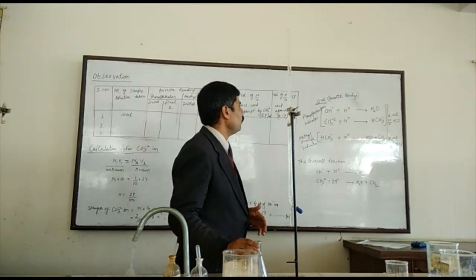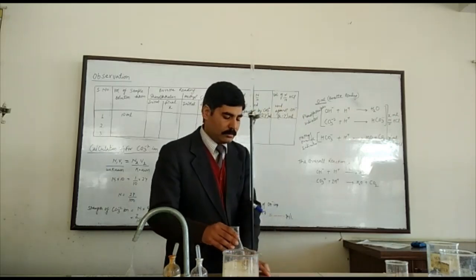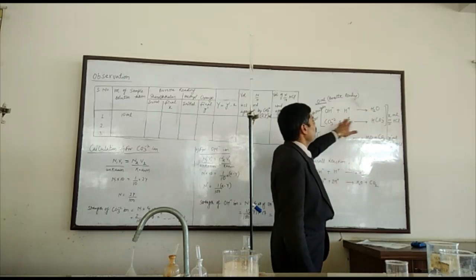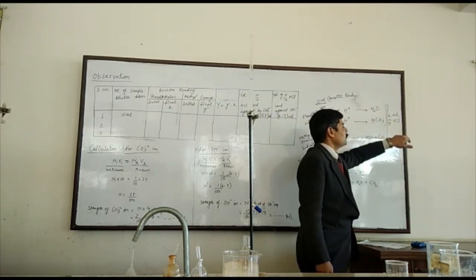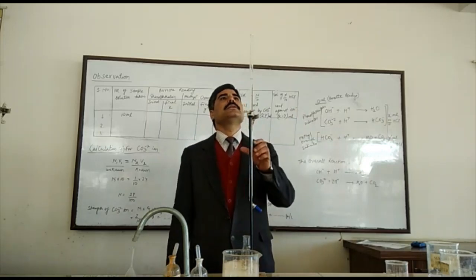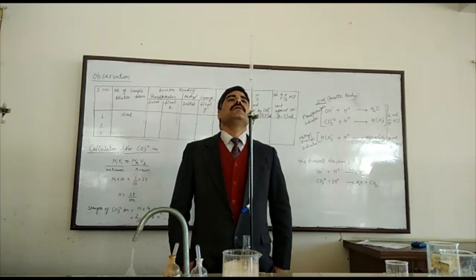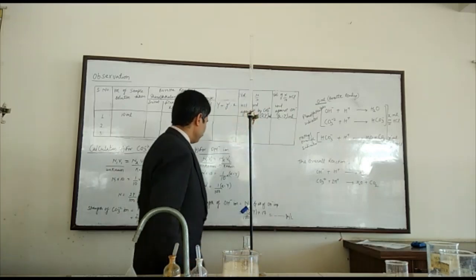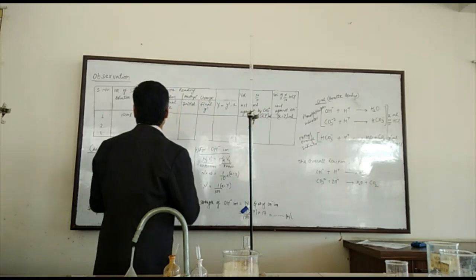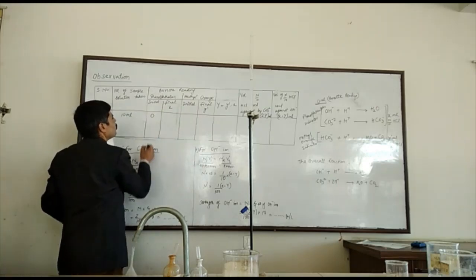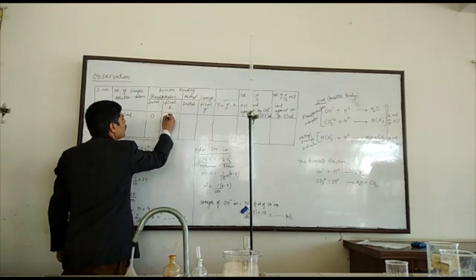This is the endpoint for the phenolphthalein indicator. During this, the hydroxyl ions get completely neutralized, whereas the carbonate ions get partially neutralized — they convert into bicarbonate. The volume of N/10 HCl consumed here is x ml. From the burette reading, that is 6.8 ml. Now we put the reading in the observation table. Volume of sample solution is 10 ml, initial is 0, and the final for the phenolphthalein indicator is 6.8 ml, which is x ml.